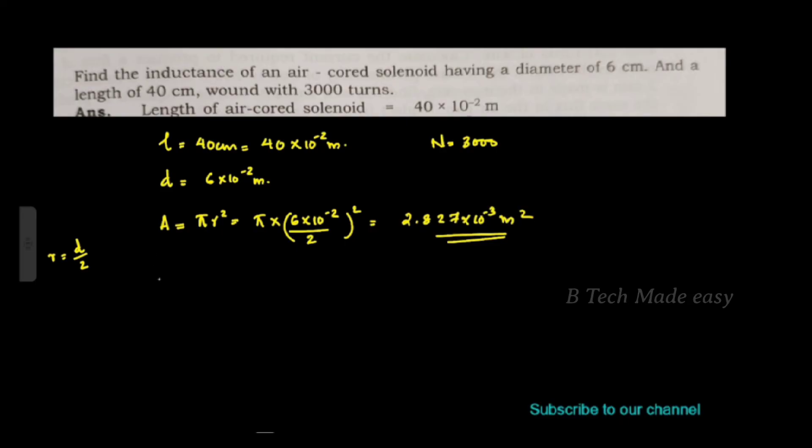Now calculate the inductance. The inductance formula is L equal to N squared divided by S, or equivalently L equal to N squared times mu0 times muR times A divided by length.